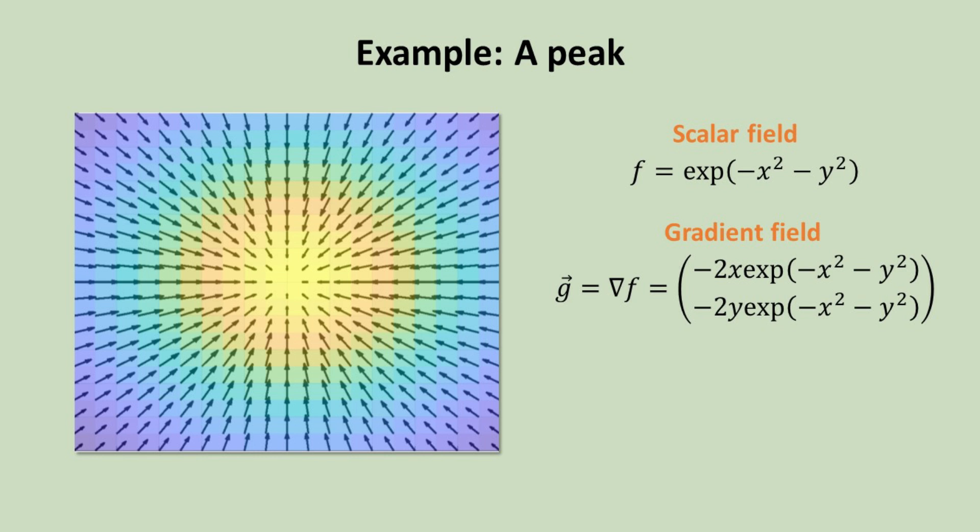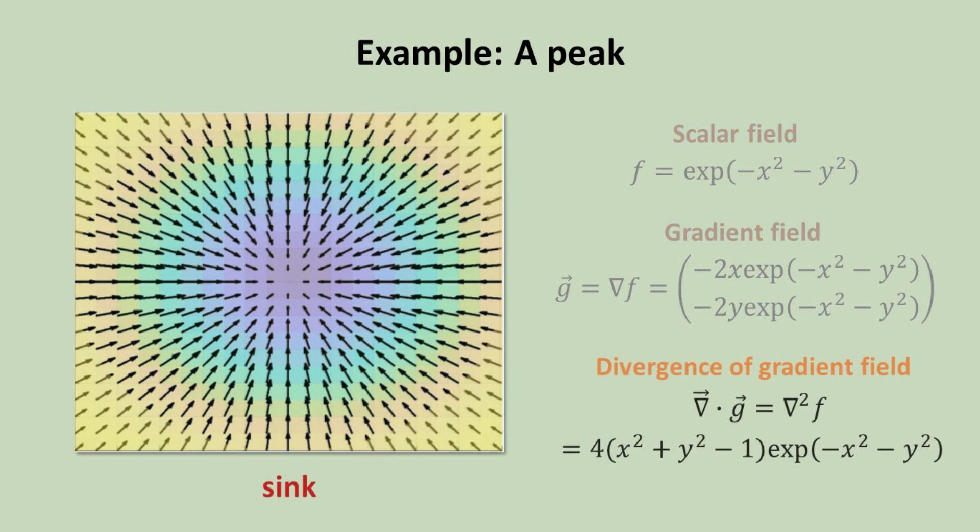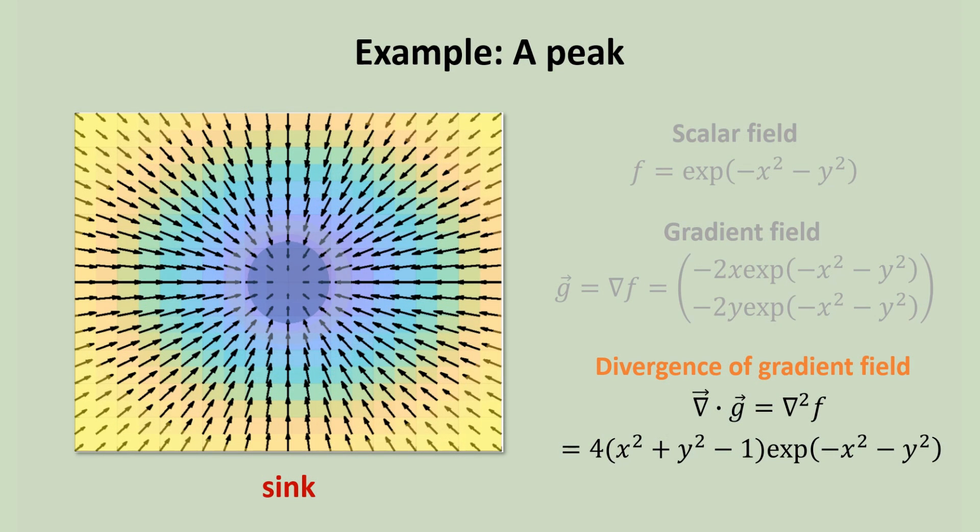Here the vector map depicts the gradient field. To better depict the regions of source or sink, we just have to plot the divergence of the gradient field, or the Laplacian of the scalar field F. This quantity is also a scalar field, and is given by this color map. The blue color indicates we have a sink, as evident from the convergence of the gradient field.